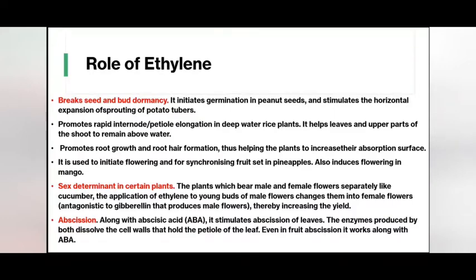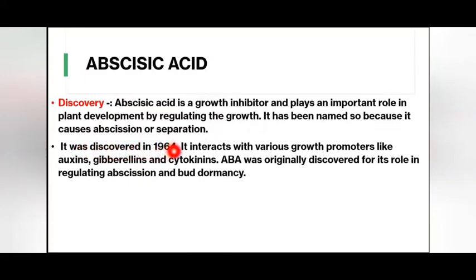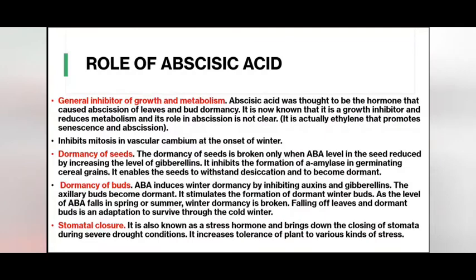Regarding abscisic acid: abscisic acid is a growth inhibitor and plays an important role in plant development by regulating growth. It has been named so because it causes abscission or separation. It was discovered in 1964. It interacts with various growth promoters like auxins, gibberellins, and cytokinins. Abscisic acid was originally discovered for its role in regulating abscission and bud dominance.